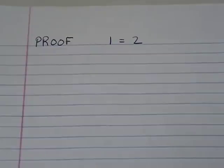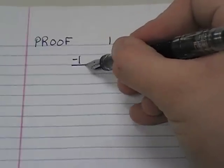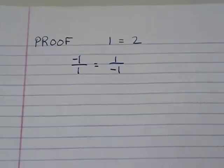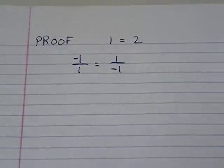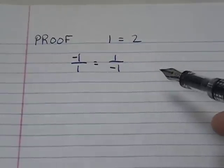What we're going to start with is something real simple. We're going to start with -1/1 = 1/-1. Just again, a different way to write -1 = -1.